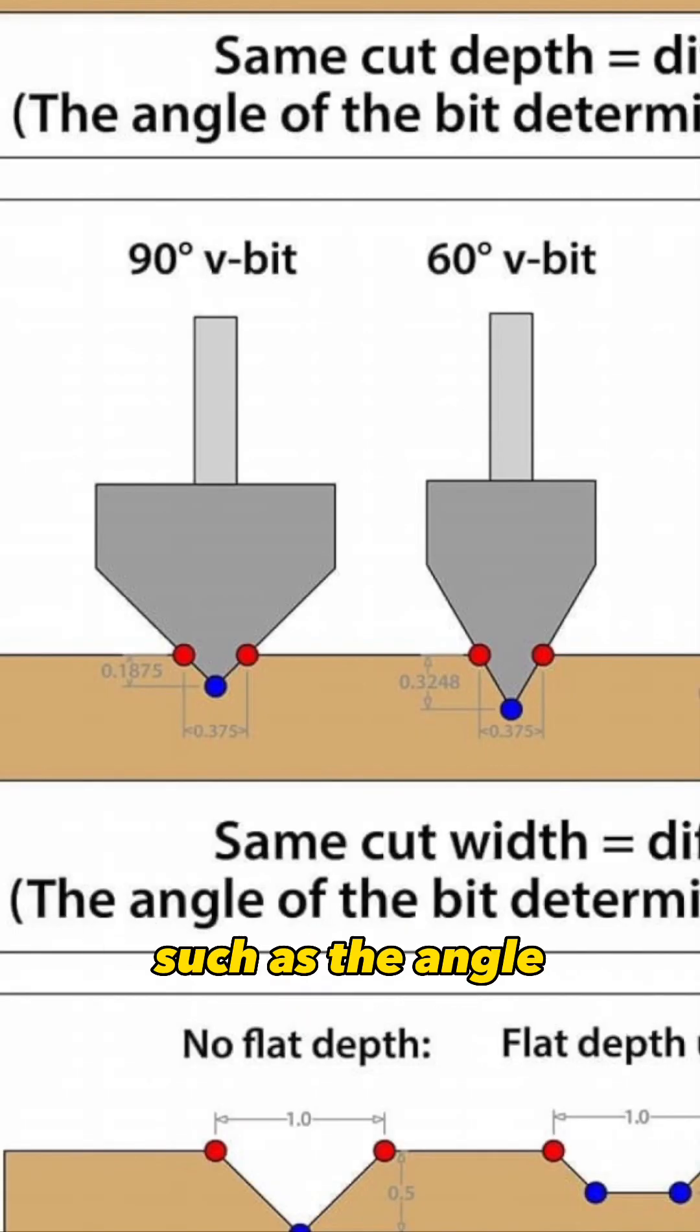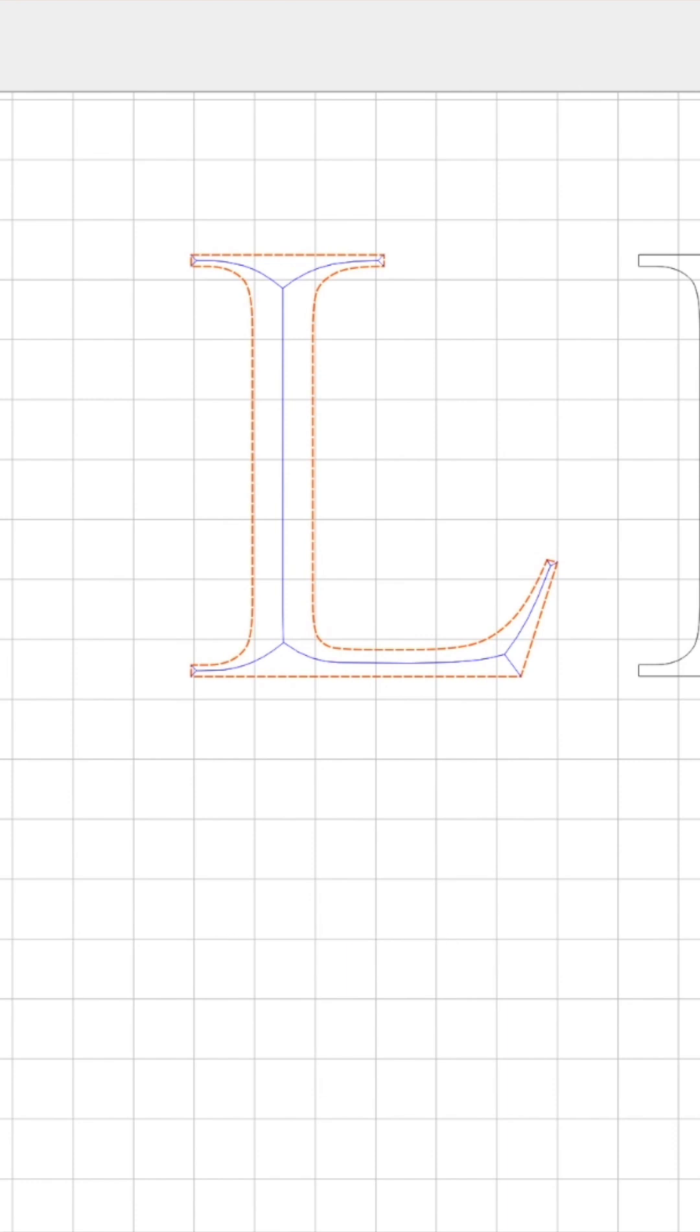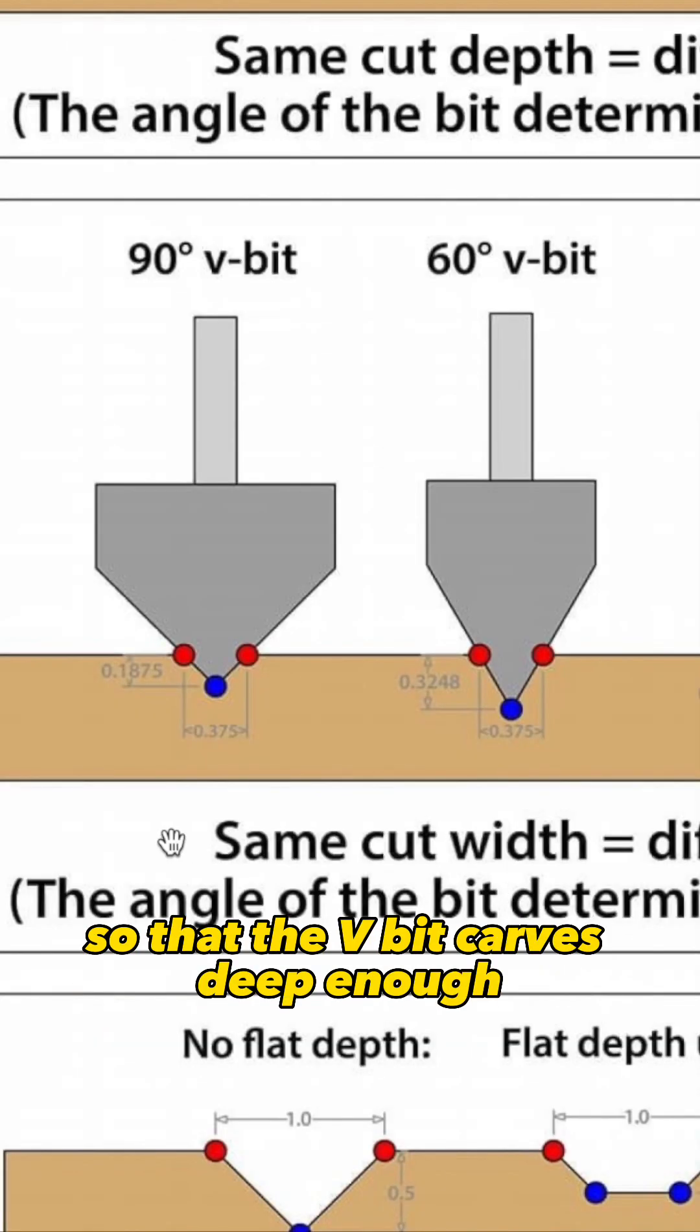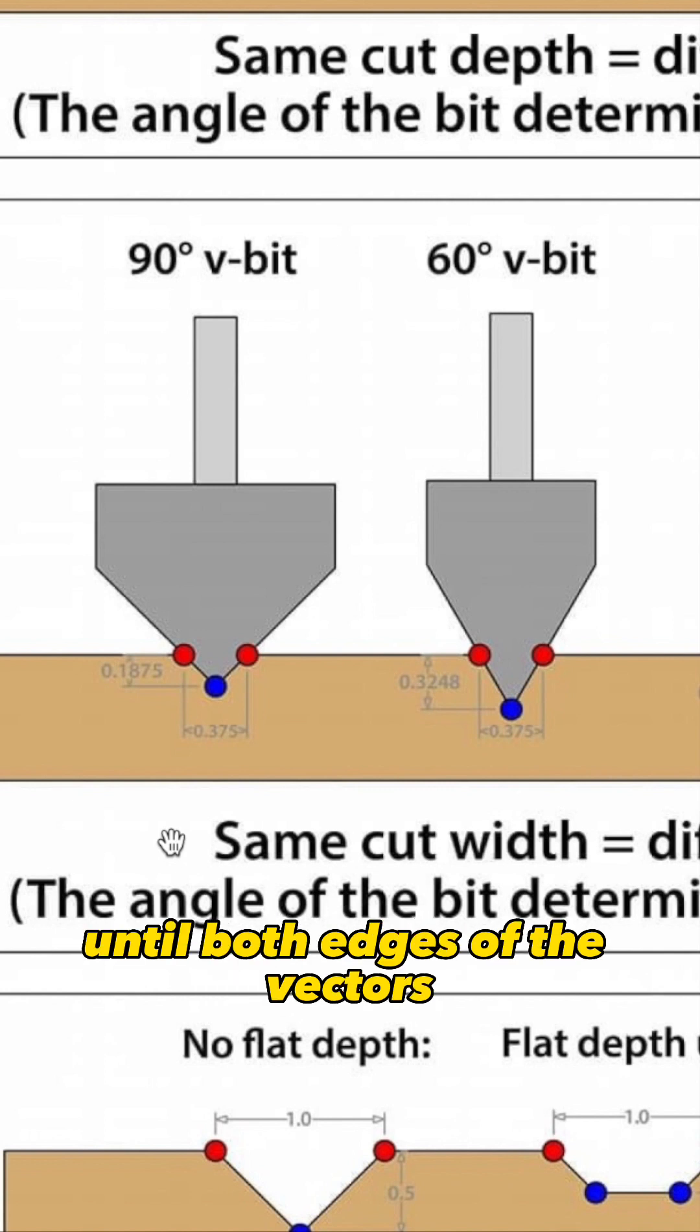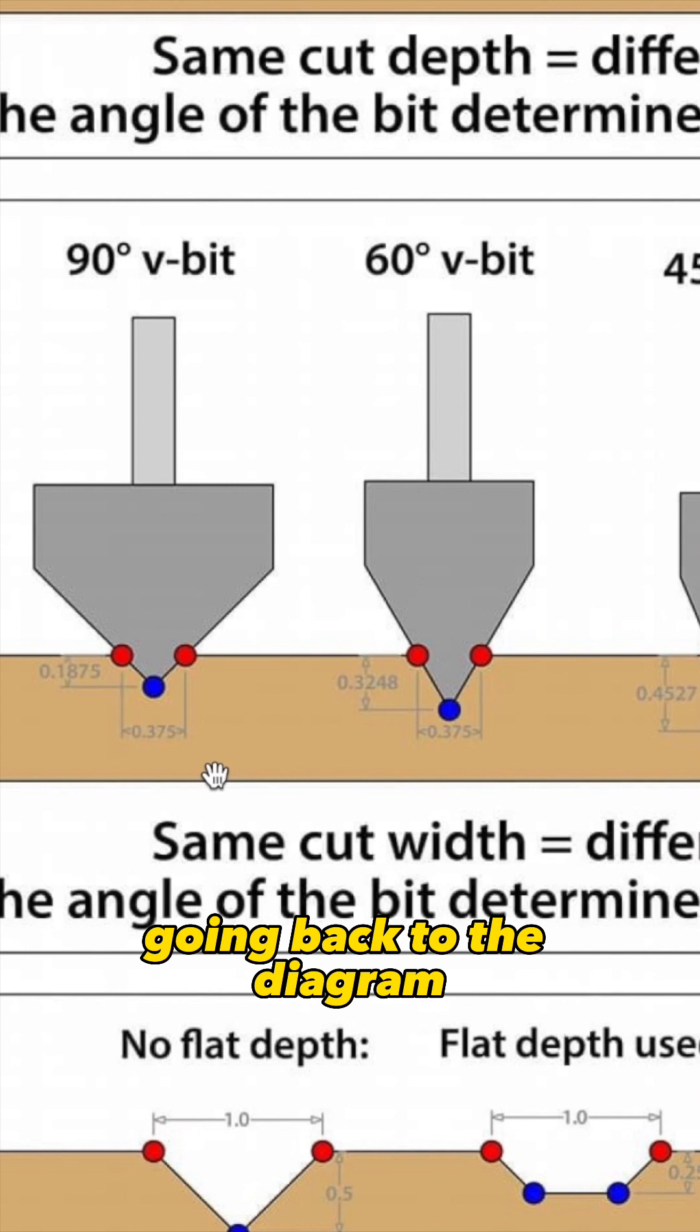Using the specification of the v-bit, such as the angle, and also the distance of the vector lines of your design, the program will calculate and determine how deep it needs to carve so that the v-bit carves deep enough until both edges of the vectors of your design are touched by the edges of the v-bit.